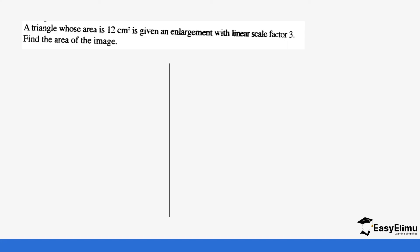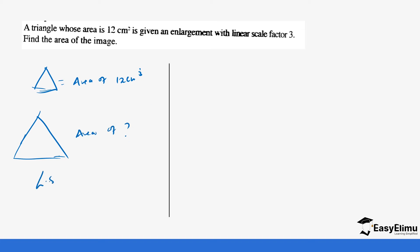Let's do a few questions. A triangle whose area is 12 cm² is given an enlargement with linear scale factor 3. Find the area of the image. We have a triangle with an area of 12 cm². It is enlarged, and we have the linear scale factor which is 3. The first thing we need to do is get the area scale factor, and we can do so by squaring the linear scale factor. So it's going to be 3 times 3, which gives us 9.